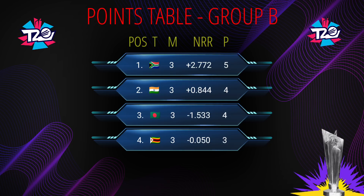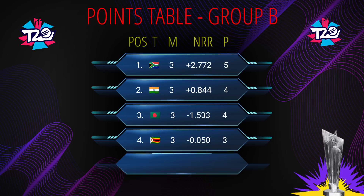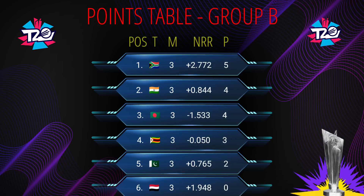Number 5: Pakistan, matches played 3, number of wins 1, total points 2. Number 6: Netherlands, matches played 3, number of wins 0, total points 0.